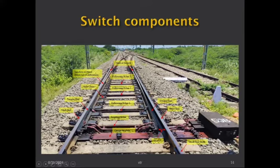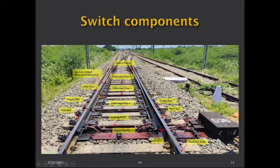From the heel of switch toward the toe, only the stock rail is fixed to the sleepers; the tongue rail is not fixed — it is held only by stretcher bars and floats freely on the slide chairs. With respect to the heel block acting as a hinge, the tongue rail moves to set to main line or loop line movement. When set to loop line, it is called the reverse position; when set to main line, it is called the normal position.